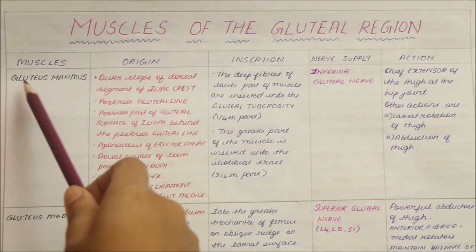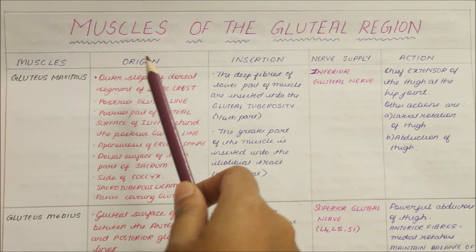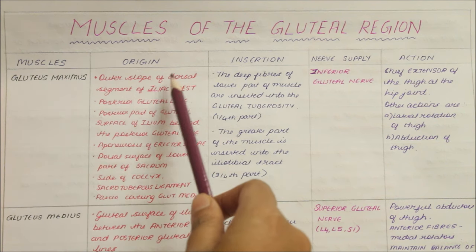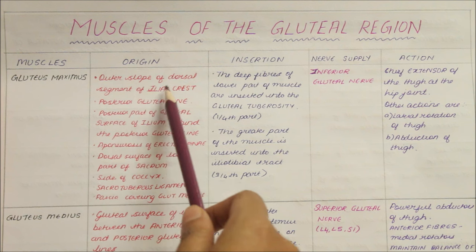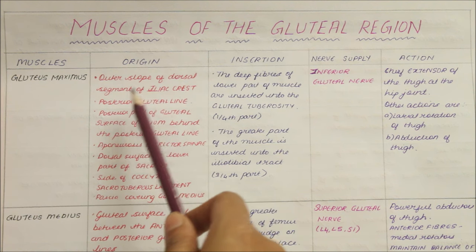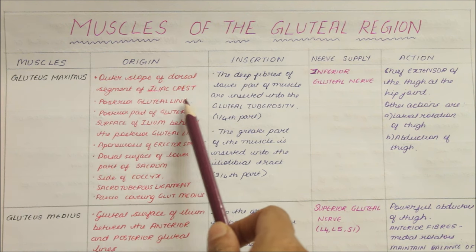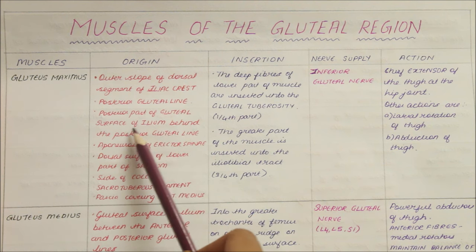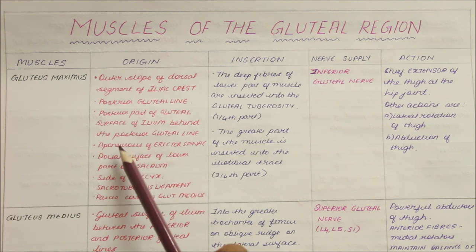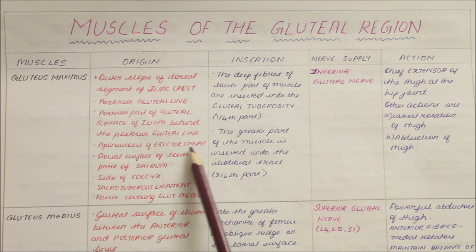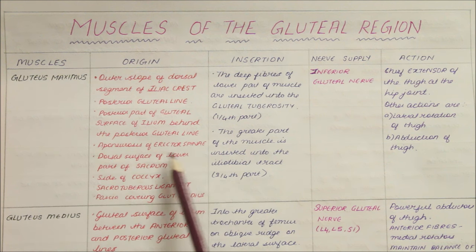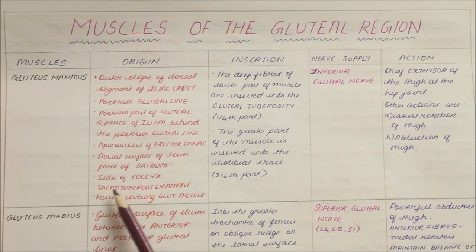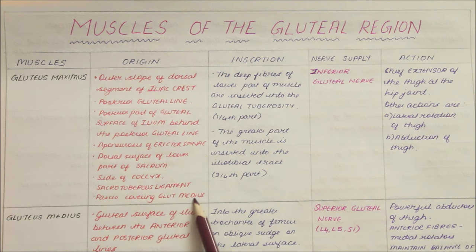Firstly, we have the gluteus maximus. It originates from the outer slope of the dorsal segment of the iliac crest, the posterior gluteal line, the posterior part of the gluteal surface of the ilium behind the posterior gluteal line, the aponeurosis of erector spinae, the dorsal surface of the lower part of sacrum, side of coccyx, the sacrotuberous ligament, and from the fascia covering the gluteus medius.